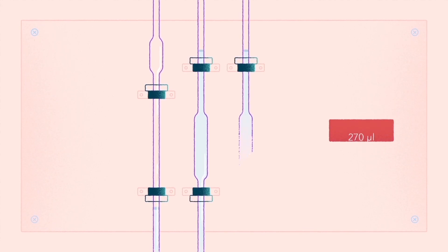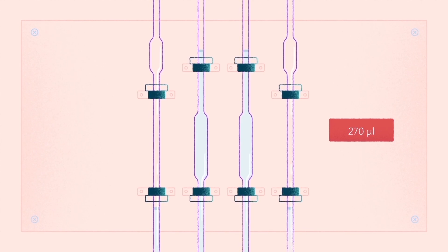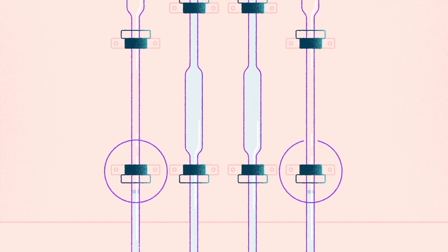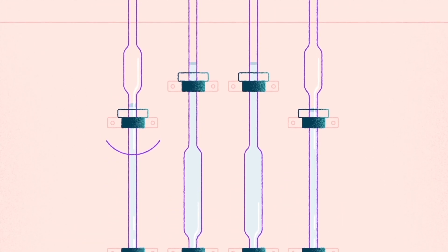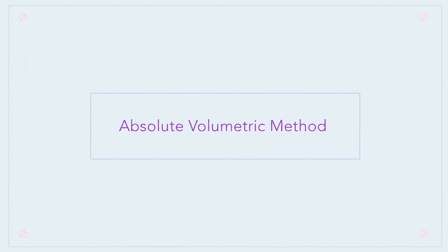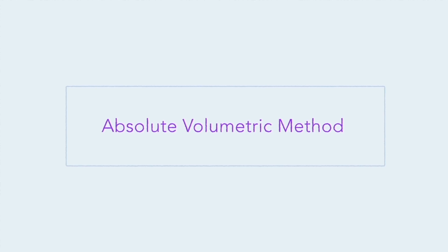During each counting cycle, a precise volume of 270 microliters of the final dilution will be analyzed in both measuring chambers. The volume is controlled by the measuring tubes. When the liquid passes the optical path of the start sensor, the counting is activated. When the liquid passes the stop sensor, the counting is finished. Using an absolute volumetric method will be the most accurate and robust way of controlling the count cycle.